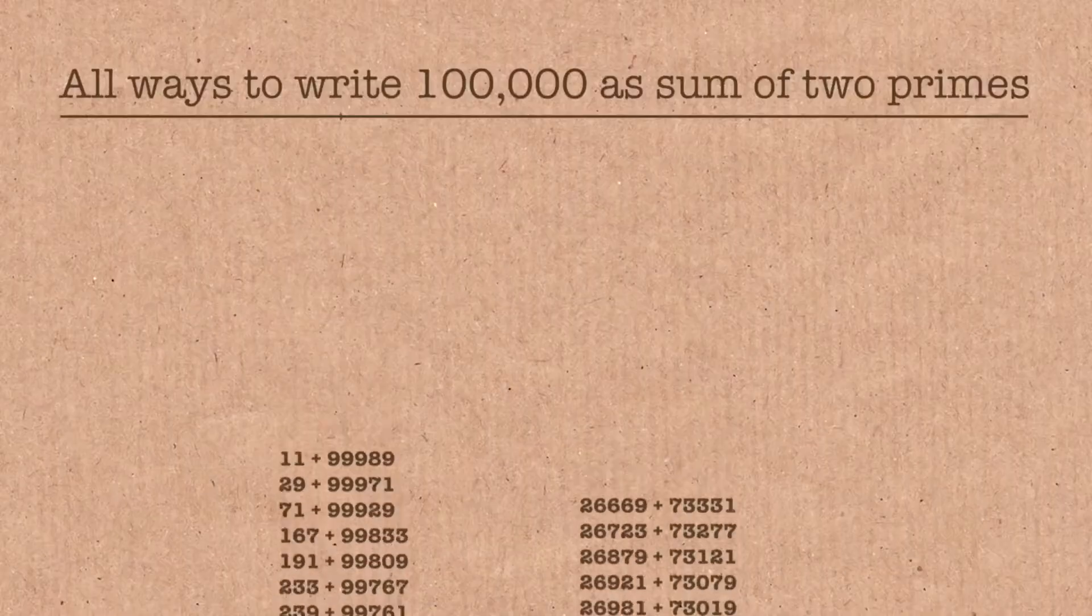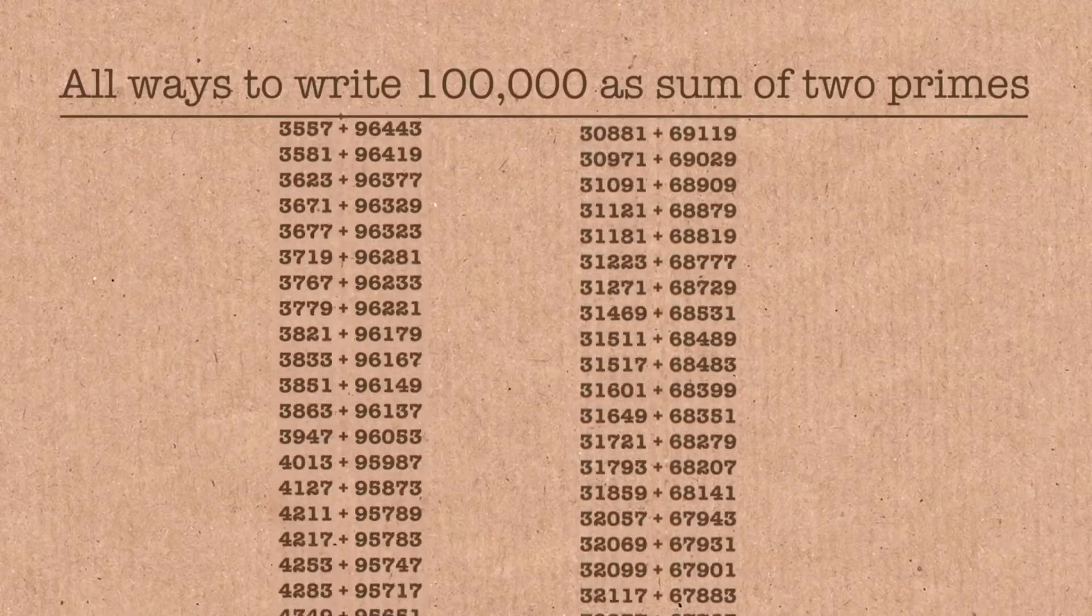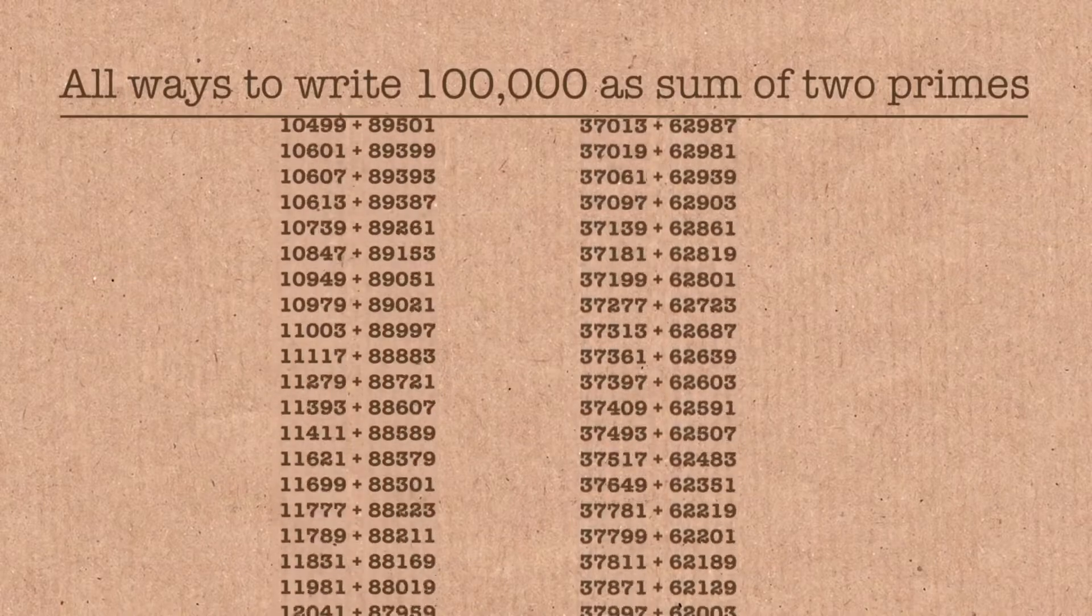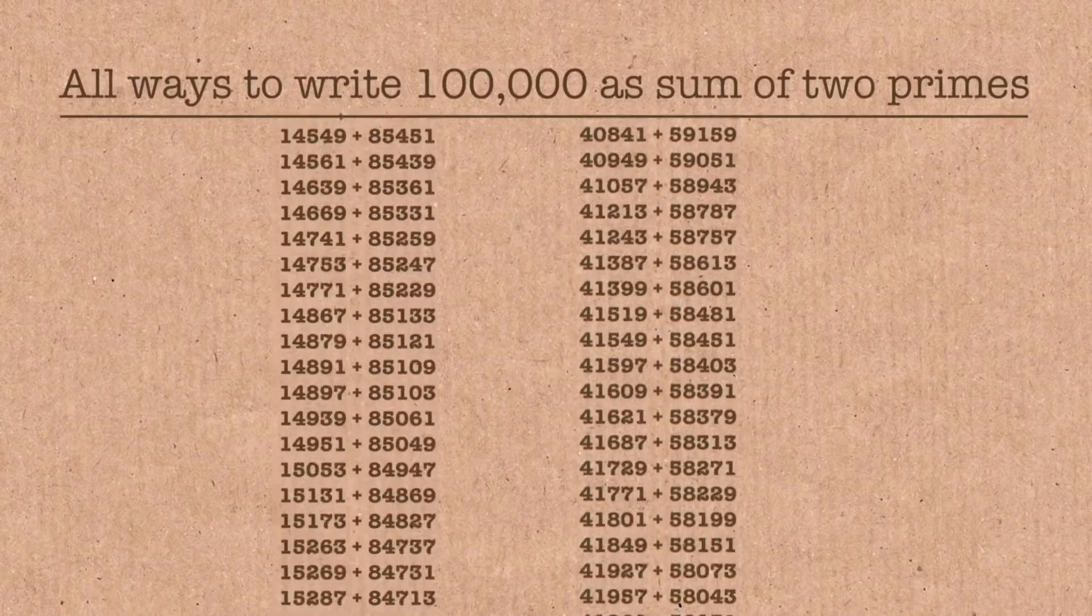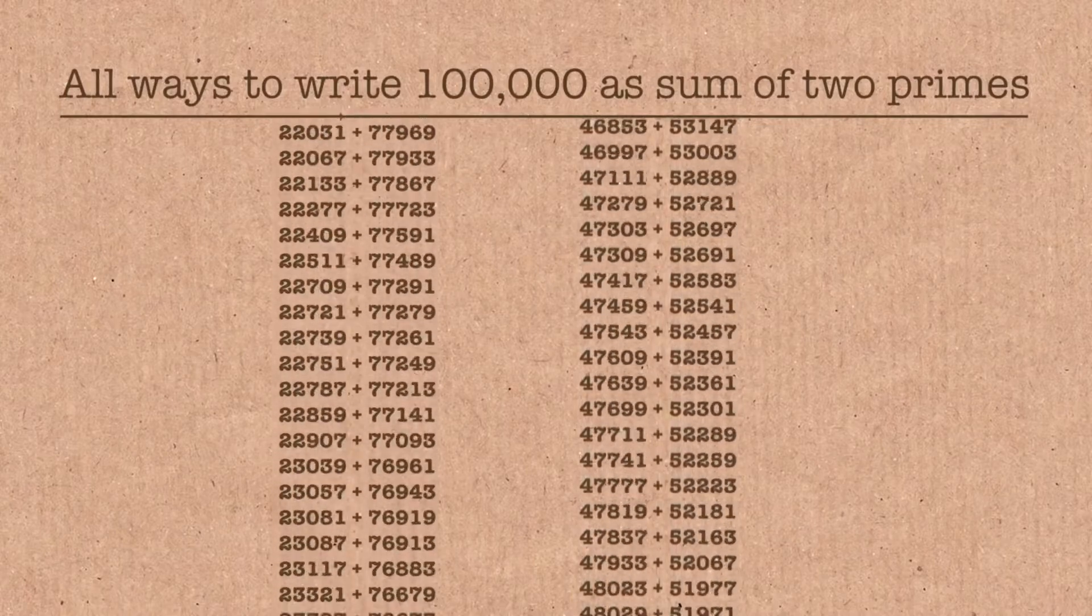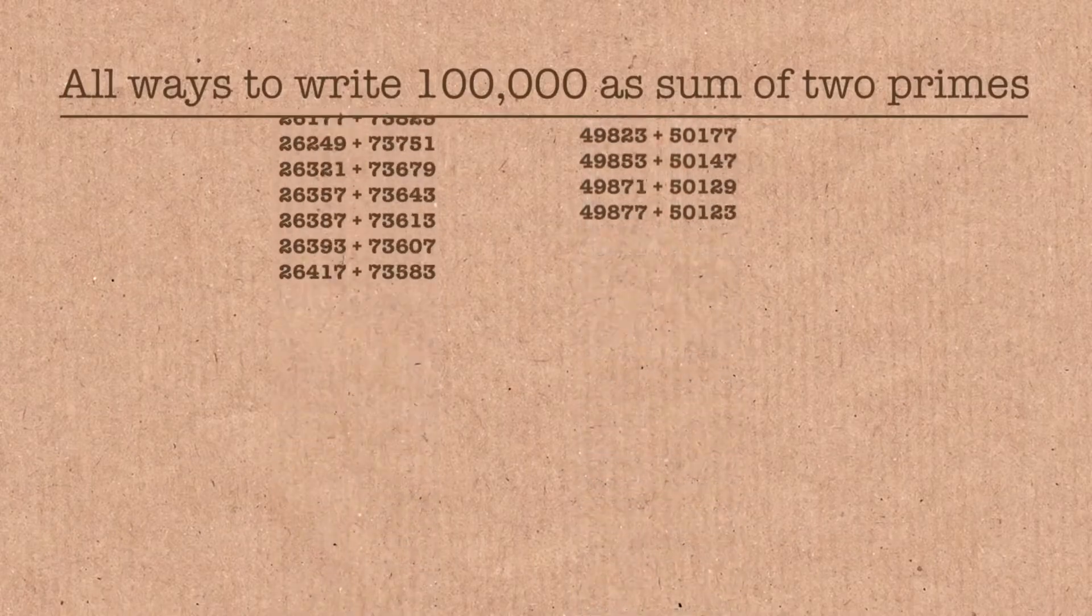So for any given large number, there are going to be lots of ways of writing it as the sum of two primes. Somebody I was talking to said maybe that's why it's so hard to prove. If there were a unique way, then maybe you could just find it. You could figure out a formula for it. But if there are just any old ways, almost everything works, then how are you going to find that needle in a haystack? Or the haystack around the needle, rather.